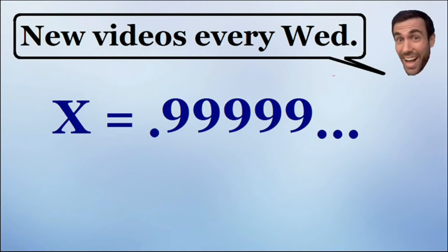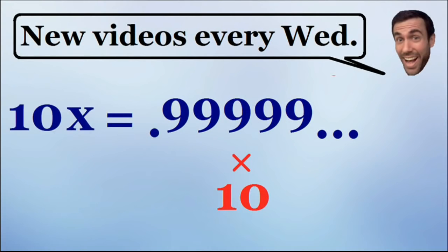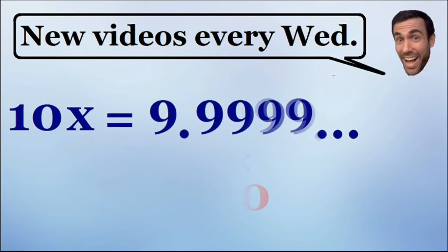Now if we multiply both sides of this equation by 10, on the left hand side we have 10 times x which is just 10x, and on the right hand side we have 10 times 0.999... repeating, which means we just have to move the decimal point one place to the right, so we have 9.999... repeating.